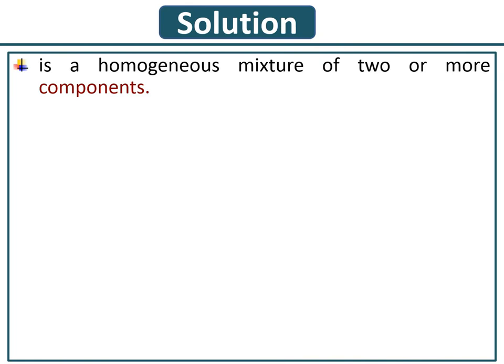One component can exist in large amounts and the other one may be in lower amounts. One may be a major component, the other one may be a minor component in the mixture. Based on that, we will define two different names or two different elements in the solutions, which are solutes and solvents.